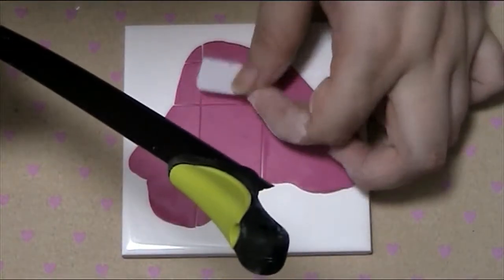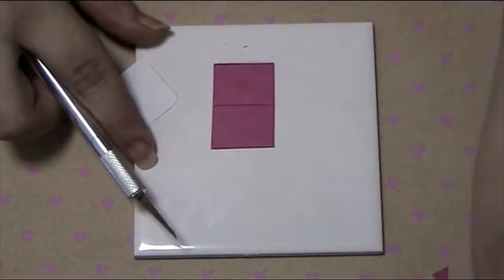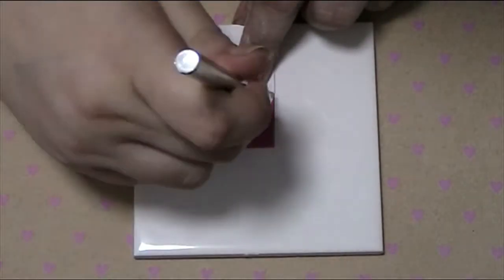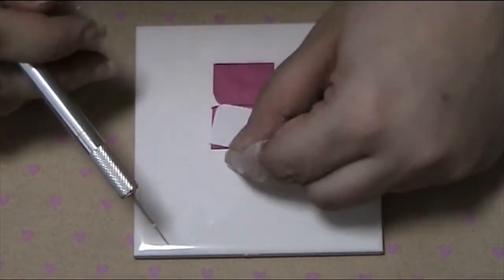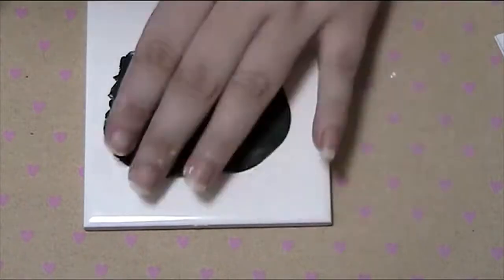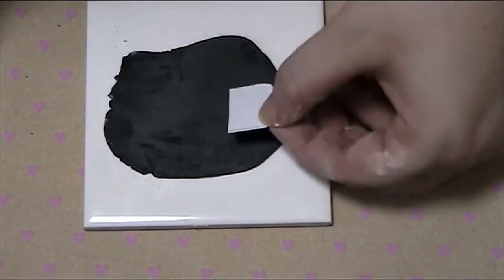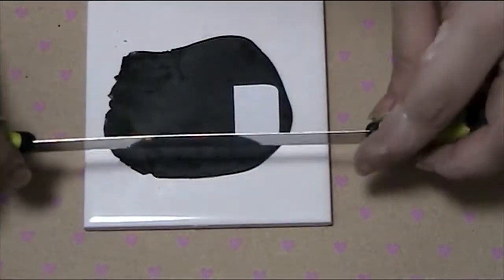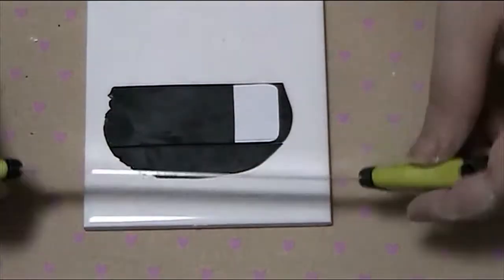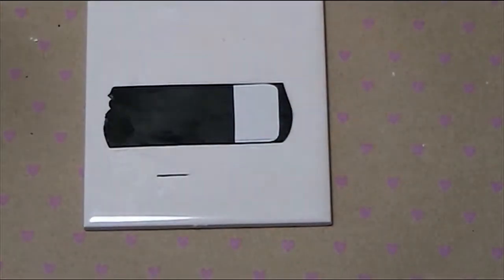Then pre-bake these pieces for 10 minutes. Next, you will want to roll out some black clay to two or three millimeters in thickness. To help with sticking, I use cornstarch. Then cut out three of the template pieces.